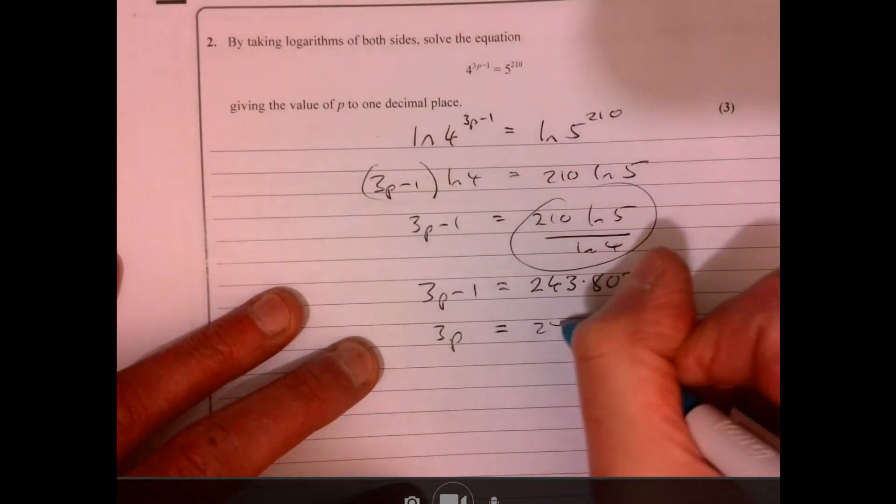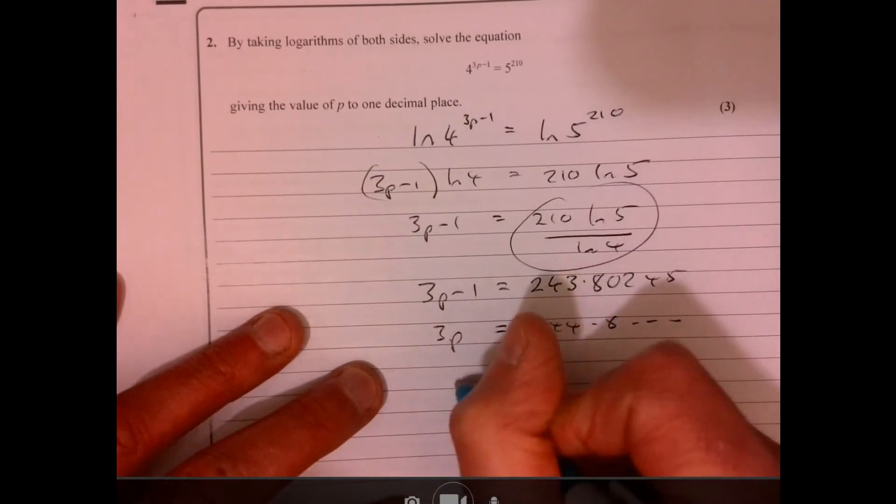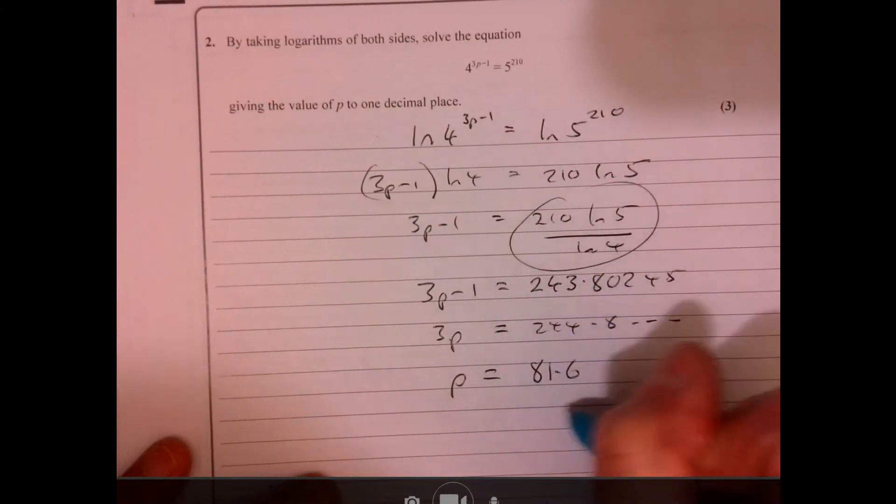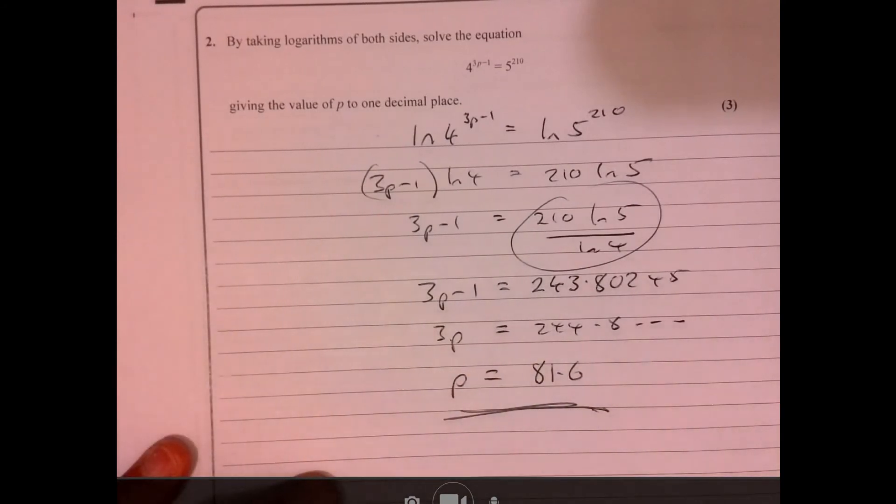Divide by 3 and you'll get 81.6. So quite a nice three marks, looks a little scary.